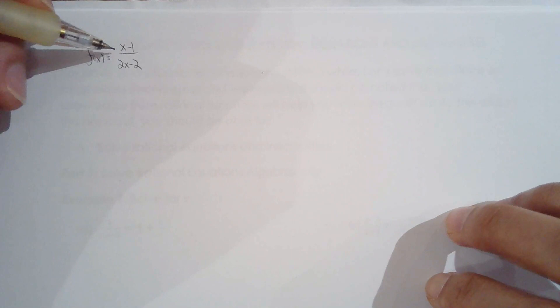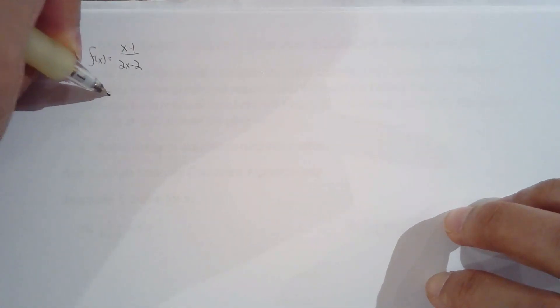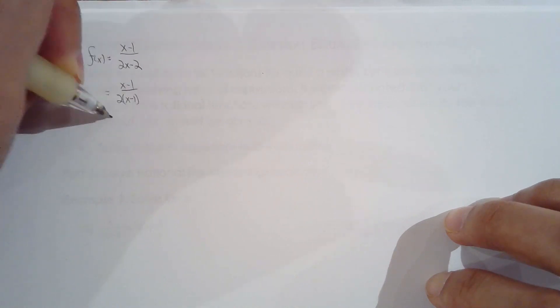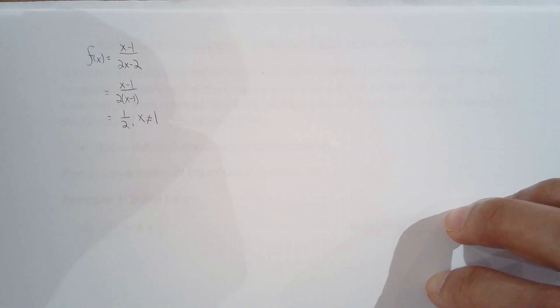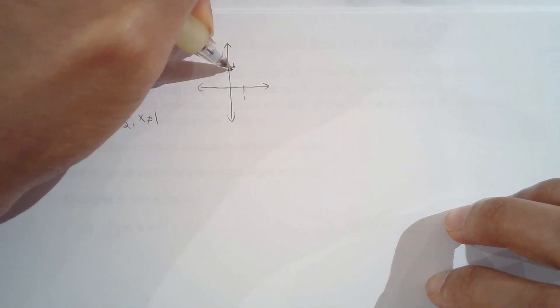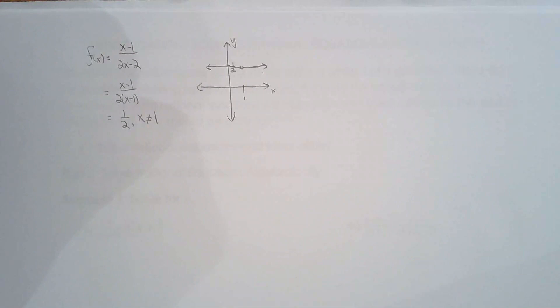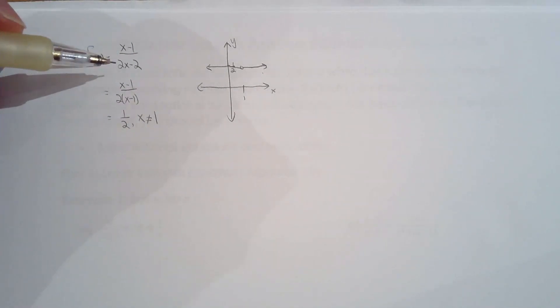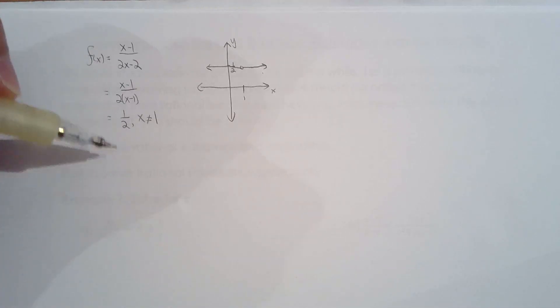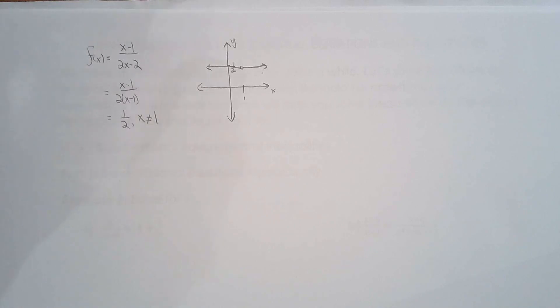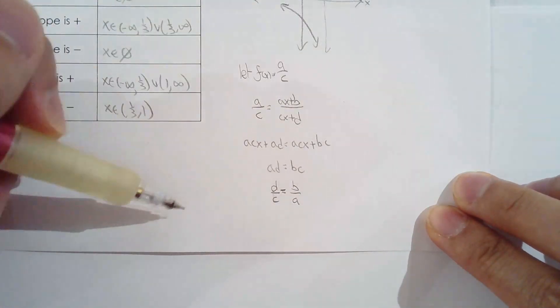So if the numerator and denominator are multiples of one another, how does the graph look? Don't forget to put the restriction, just like you did in grade 11 when you canceled out common factors in rational expressions. The result is a horizontal line with a hole. So if you're working with a linear over linear rational function and you have a common factor, you're not going to have a horizontal asymptote — all you have is a horizontal line with a hole. This concludes what I wanted to cover about linear over linear rational functions.